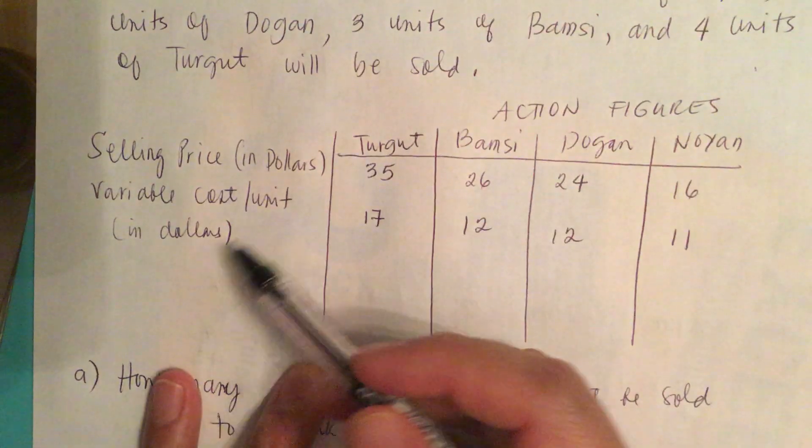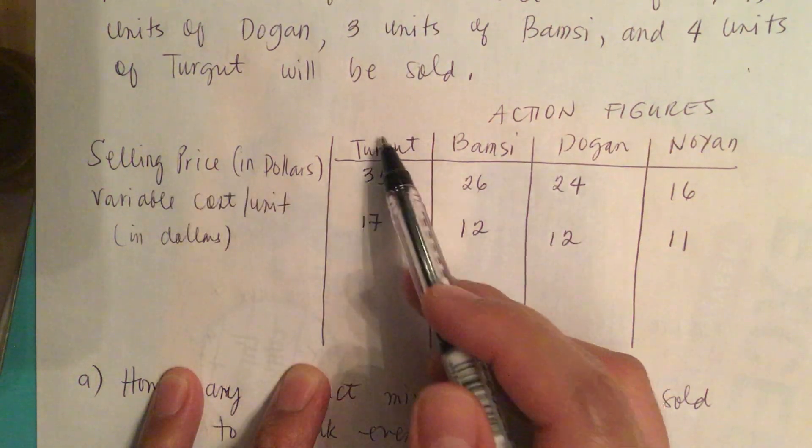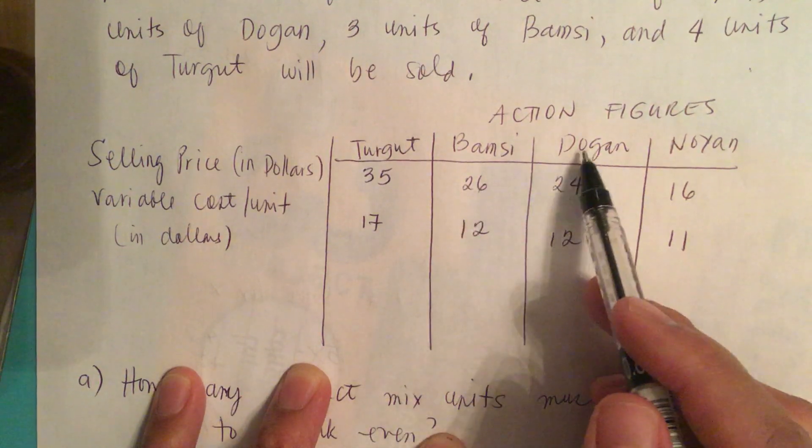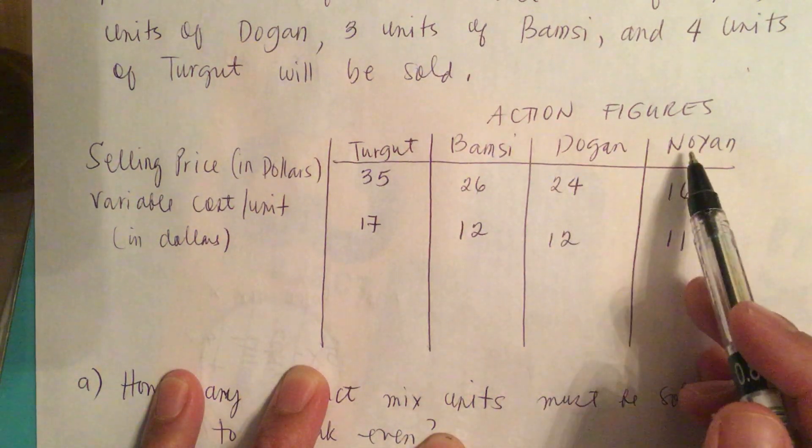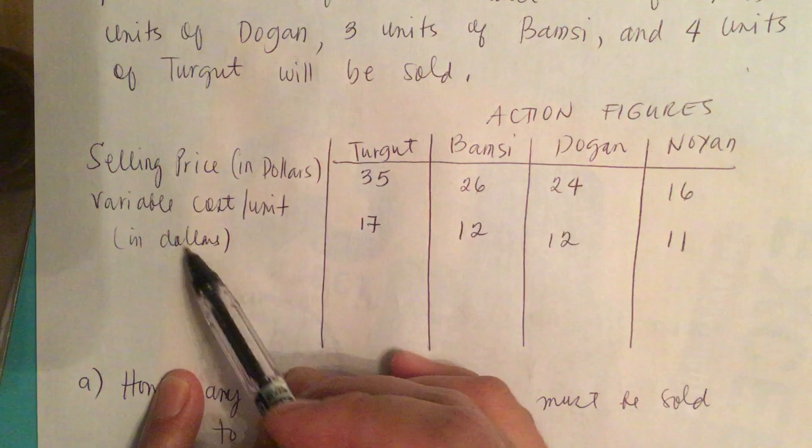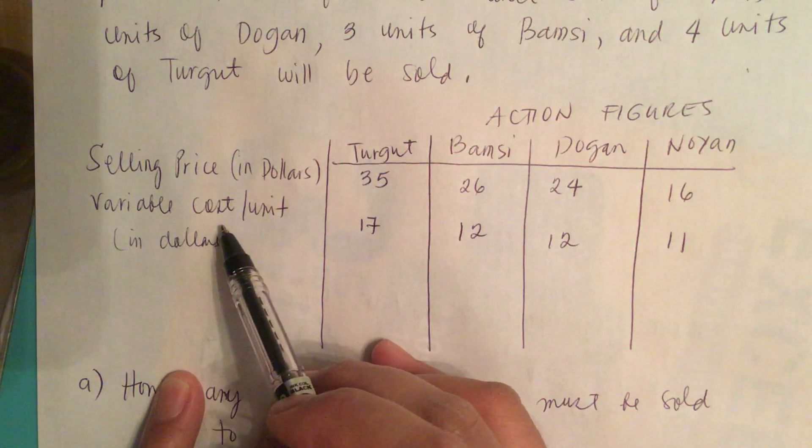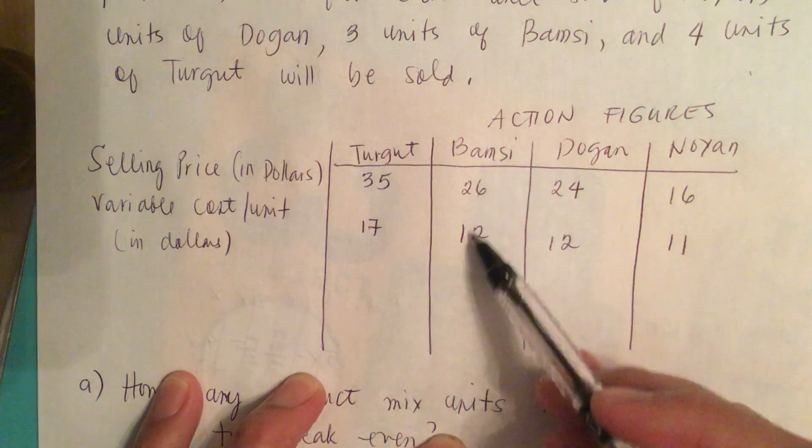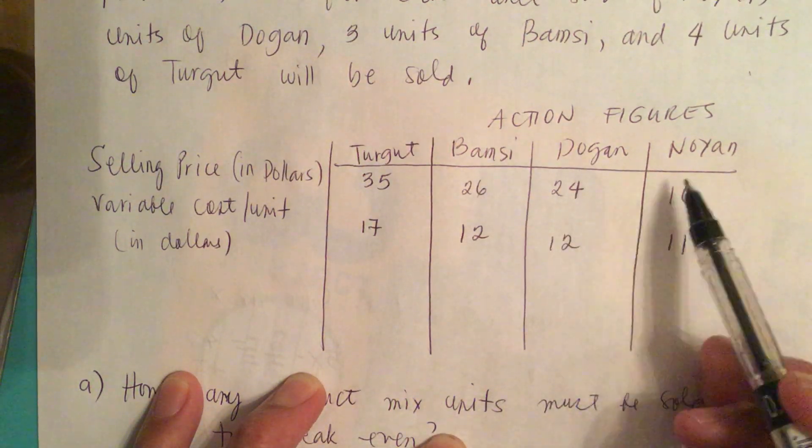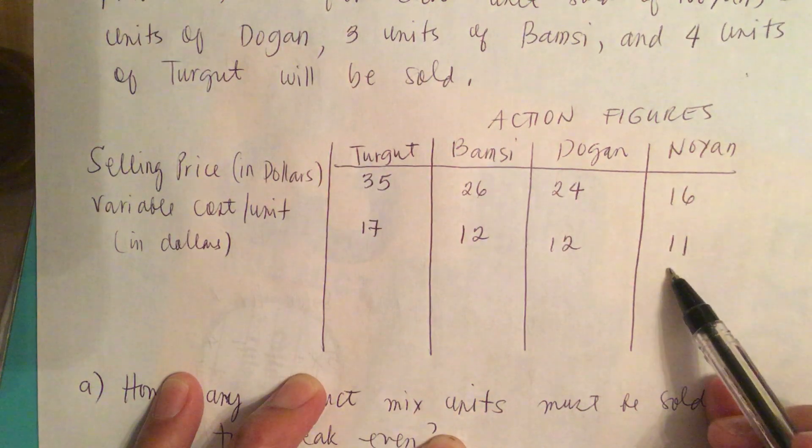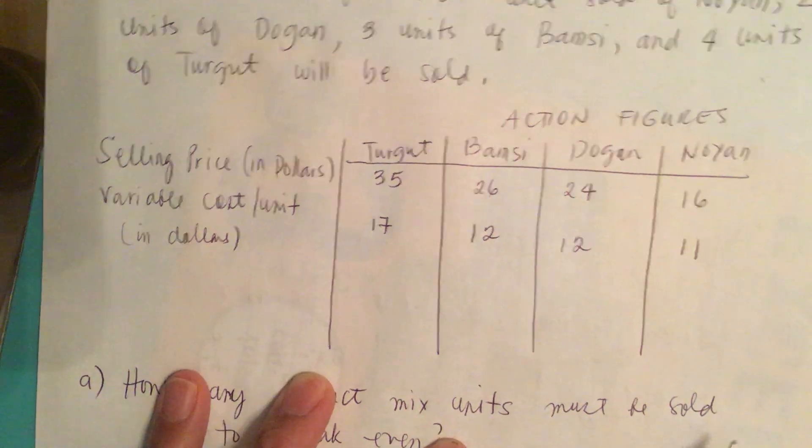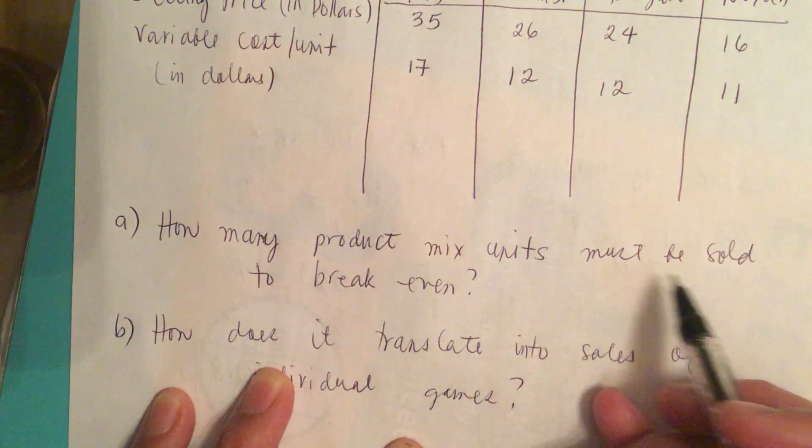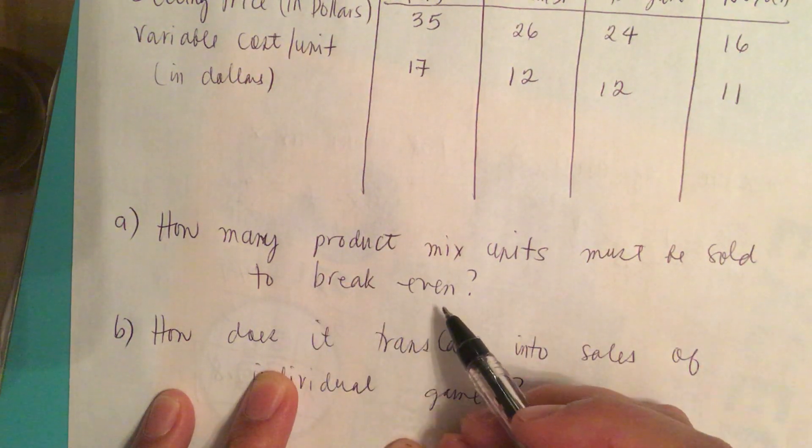So here's the table. The selling price for Turgut is $35, Bamsi $26, Dogan $24, Noyan $16. And the variable cost per unit is for Turgut $17, Bamsi $12, Dogan $12, and Noyan $11. So how many product mix units must be sold to break even?